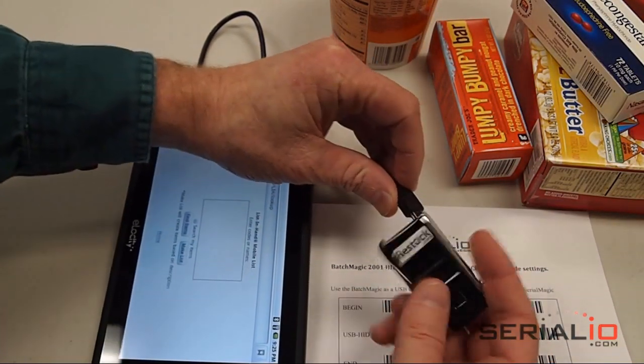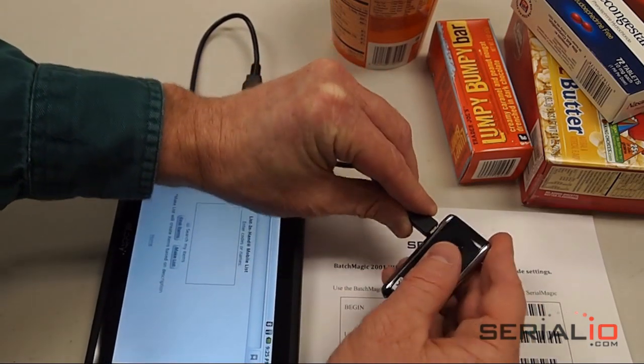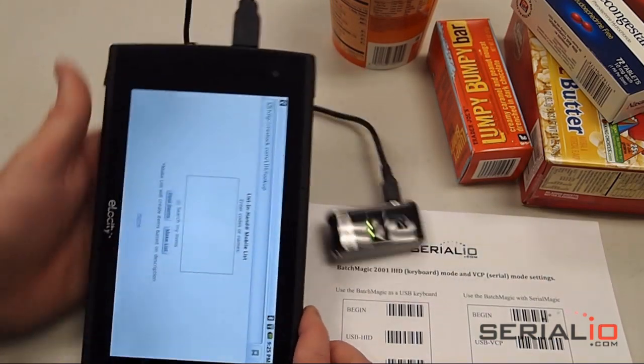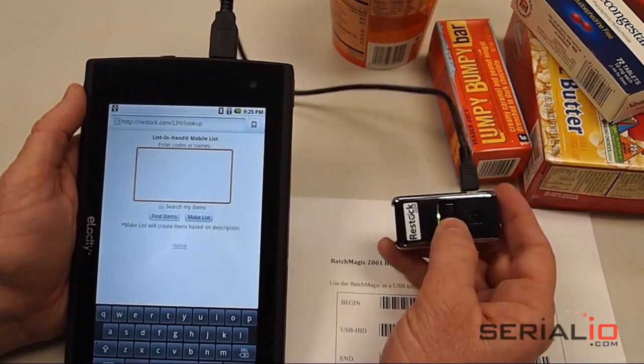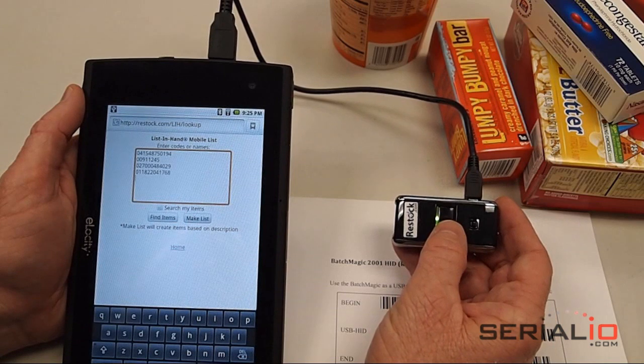You can plug the scanner into the cable and it will recognize the scanner. It will give you a chirp. You tap where you want the data to go, hold down the scan button, and it will transfer the data from memory.